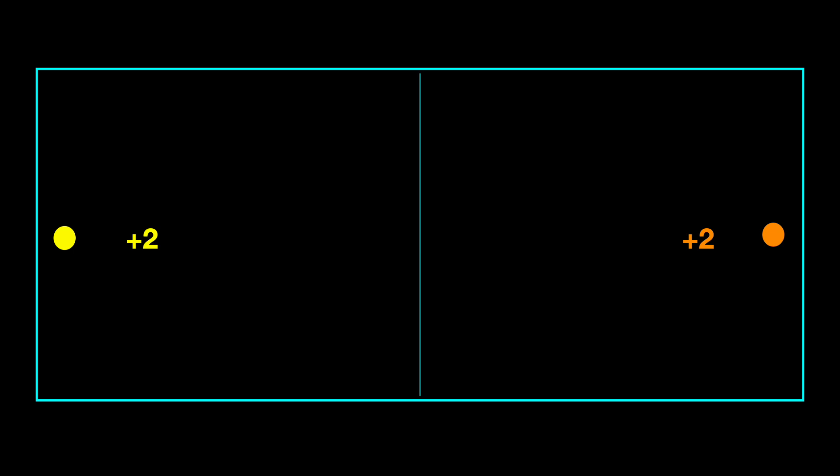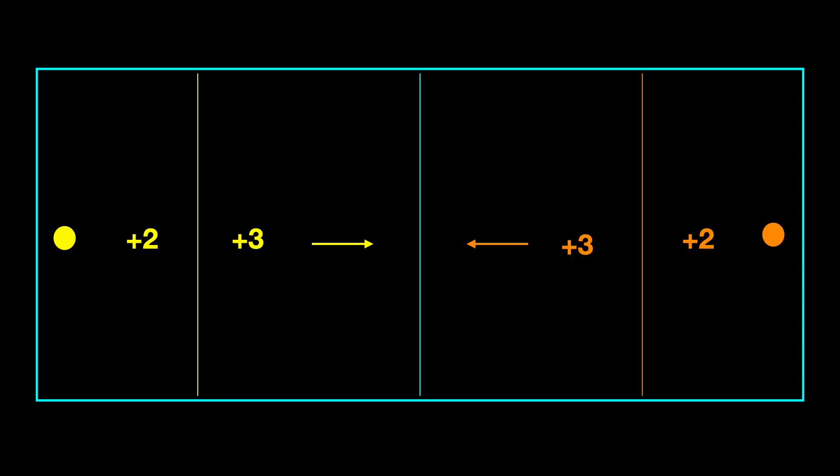Remember, geometry is a game and we start with rules and then we play. You might remember from our first episode that we began by saying the yellow team gets two points if they score in this goal, and the orange team gets two points if they score in their goal. And then we changed the rules — we added a three-point line.